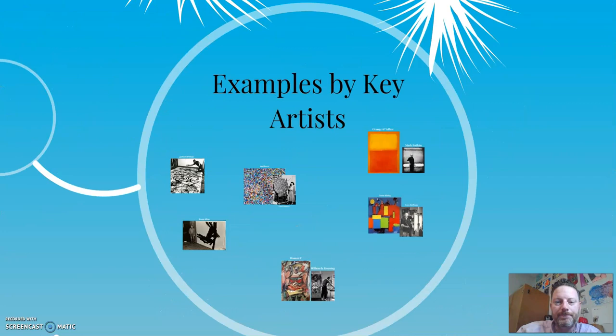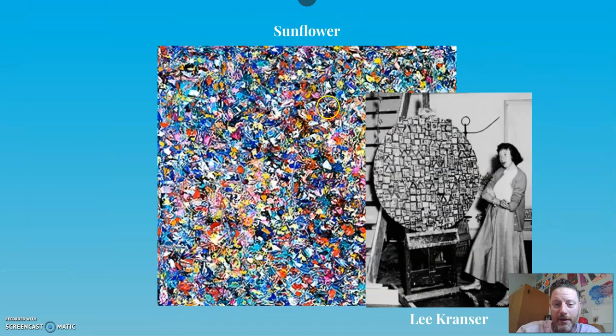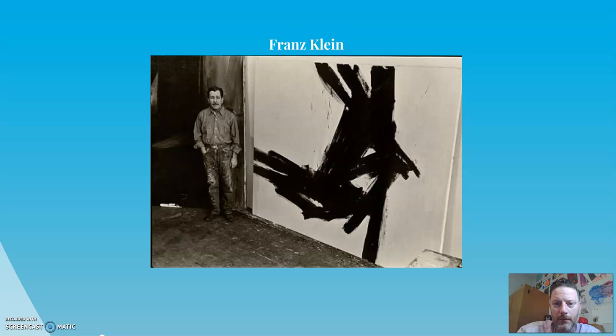Here are some quick examples. First is Jackson Pollock — you can see him physically on the canvas, moving around it. That's part of the action painting; you can see the action of him making the actual painting. Then there's Sunflower — attempting to get the actual feeling of sunflowers as opposed to drawing a sunflower. A literal sunflower versus the abstract idea of sunflower.